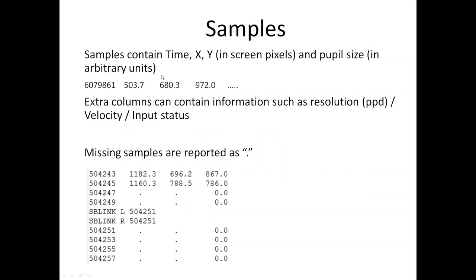In their simplest form, samples contain time, X and Y in screen pixels, and pupil size in arbitrary units. Depending on options checked during convert-to-ASCII, you can have extra columns — resolution data in pixels per degree of visual angle, which is useful for converting pixel gaze data into visual angle; an eye velocity column; and a column for the status of the parallel port pins on your host computer, useful for synchronizing with EEG or other recording devices.